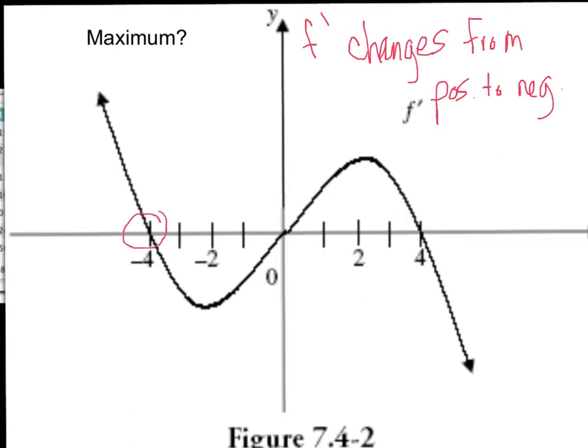So negative four is one spot where the derivative changes from positive to negative. And positive four is the other. So those would be in the original function where f is at a maximum.